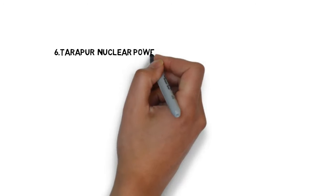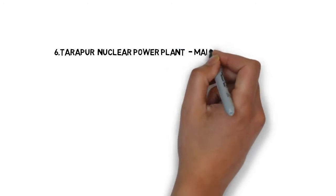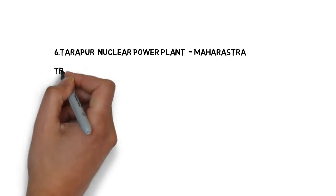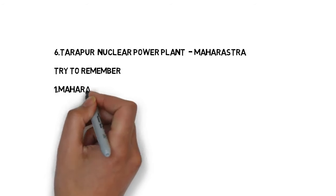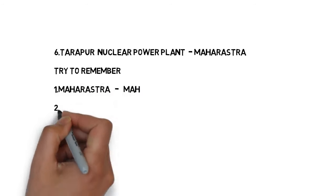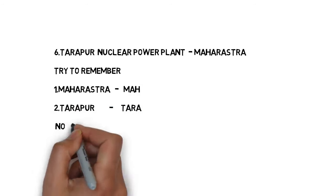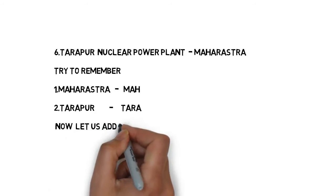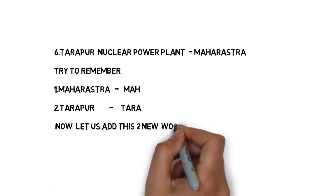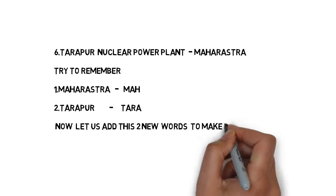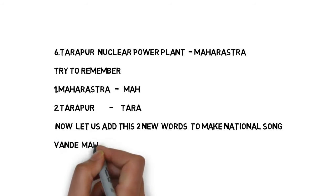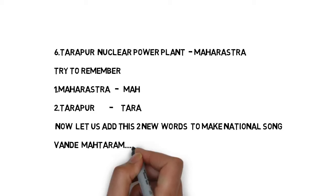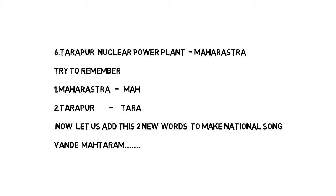Let's move to another power plant: Tarapur Nuclear Power Plant, located in Maharashtra. How do we remember this? In 'Maharashtra,' the first three letters are M-A-H, so try to remember it as 'MAH.' For Tarapur, the first four letters are T-A-R-A, so try to remember it as 'TARA.'